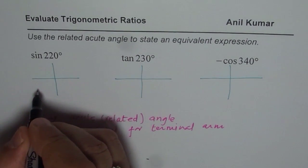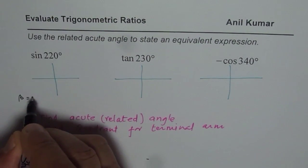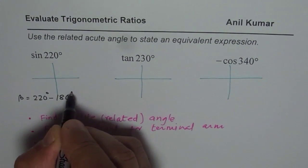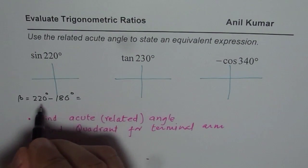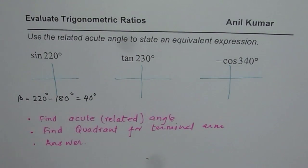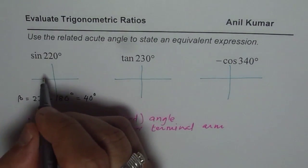So we can find the related acute angle, which is beta for us, as 220 degrees minus 180 degrees. You can use a calculator to figure this out, or it is just 40 degrees.